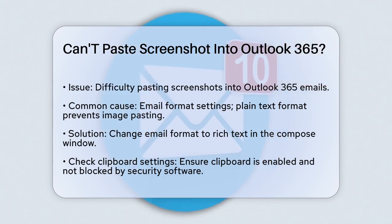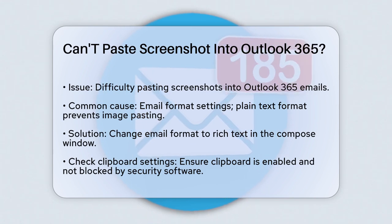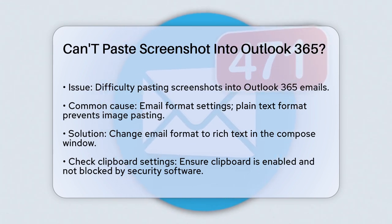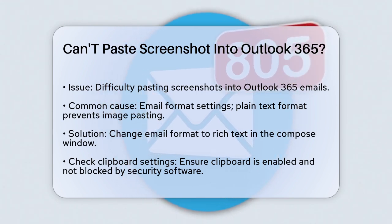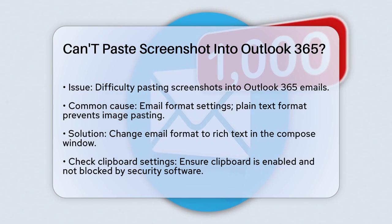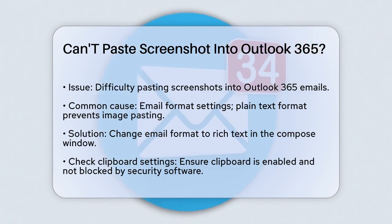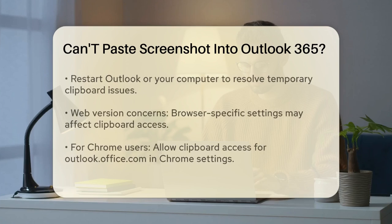Here's how. Go to the email you're composing and make sure the format is set to rich text. You can do this by checking the format options in the compose window. If it's set to plain text, change it to rich text and then try pasting your screenshot again.